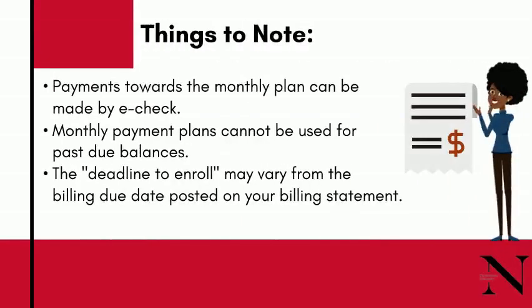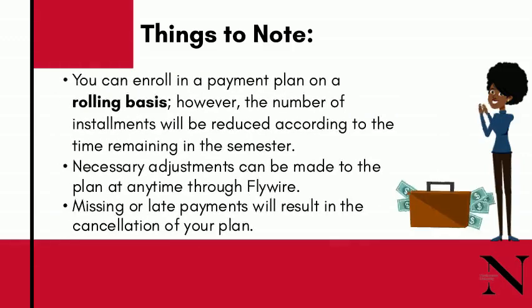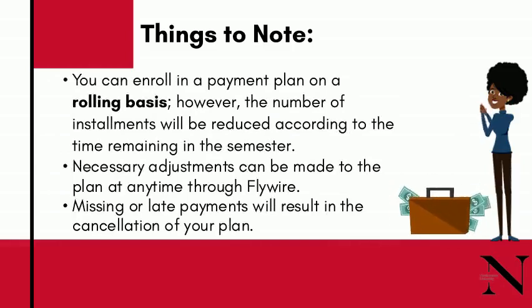Things to note. Payment towards the monthly plan can be made by eCheck. Monthly payment plans cannot be used for past due balances, and the deadline to enroll may vary from the billing due date posted on your billing statement. Additionally, you can enroll in a payment plan on a rolling basis; however, the number of installments will be reduced according to the time remaining in the semester. Necessary adjustments can be made to the plan at any time through Flywire. And lastly, missing or late payments will result in the cancellation of your plan.